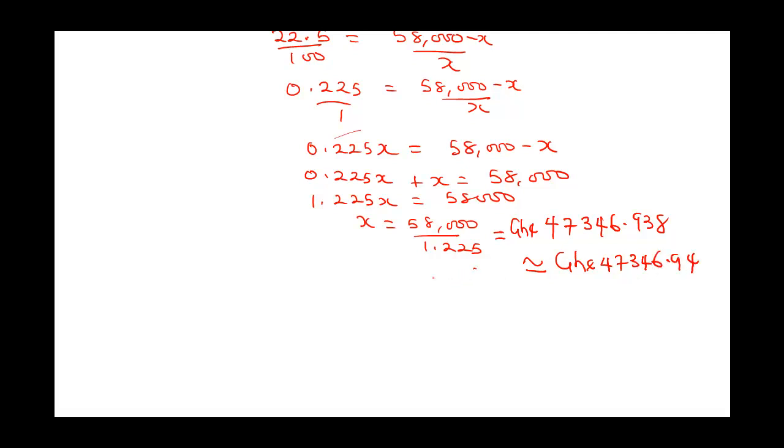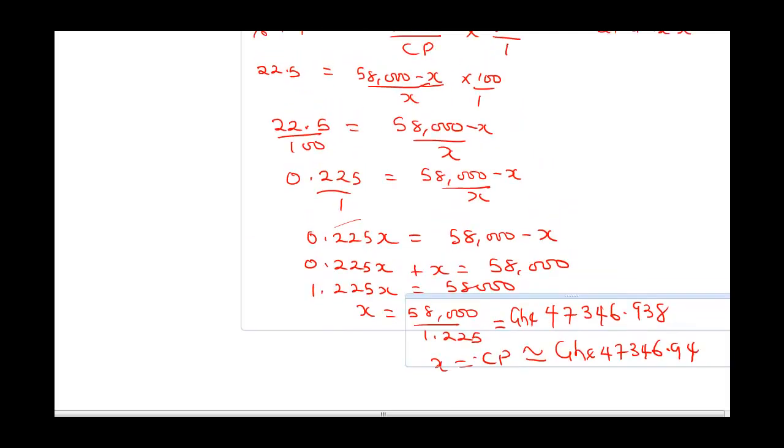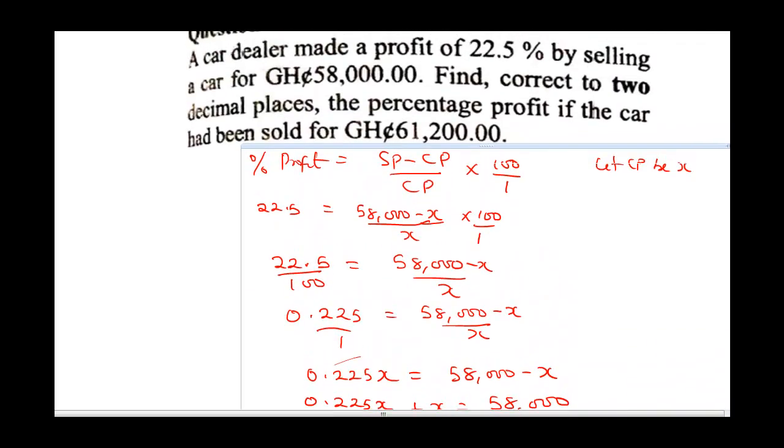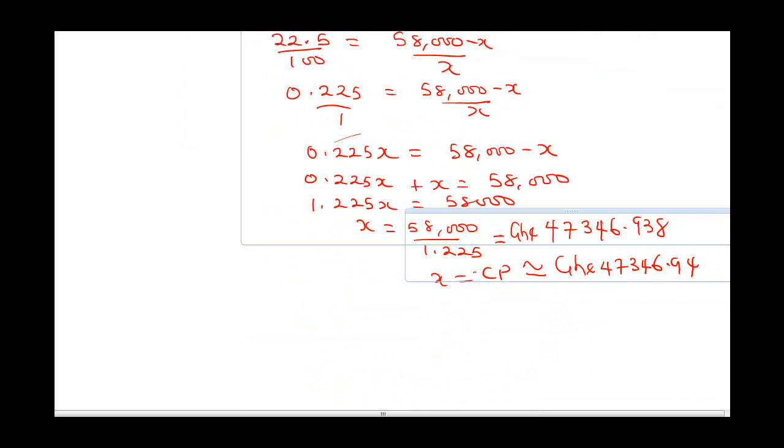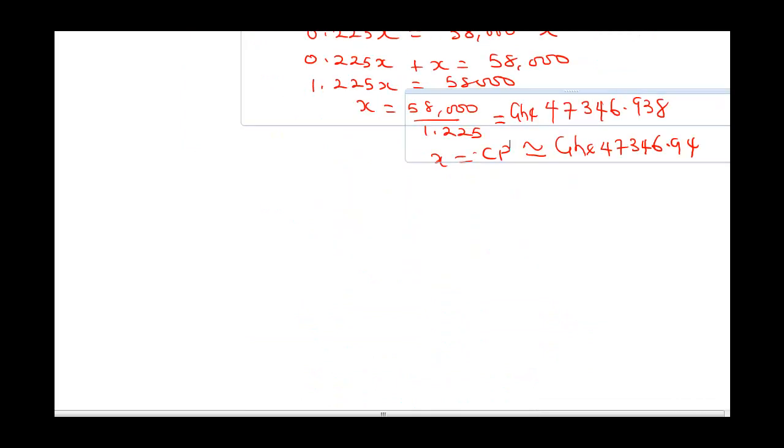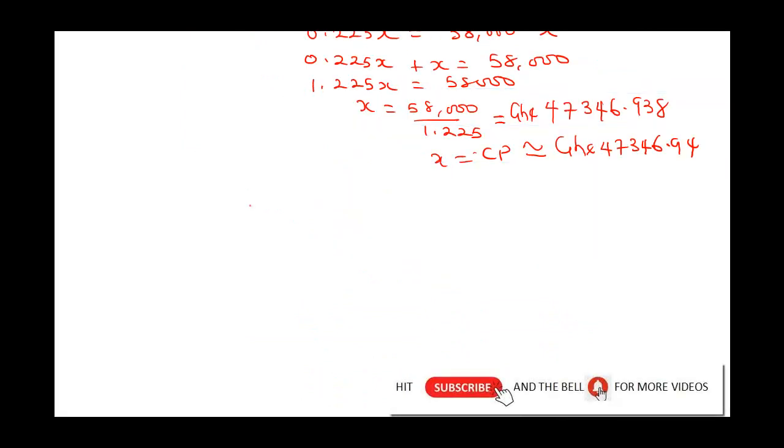Remember, this is our X, which is also the same thing as our cost price. Now, the question says find, correct to 2 decimal points, the percentage profit if the car had been sold for 61,200 Ghana cedis. Now, now we know our cost price, our selling price has changed. So we need to calculate our new profit.